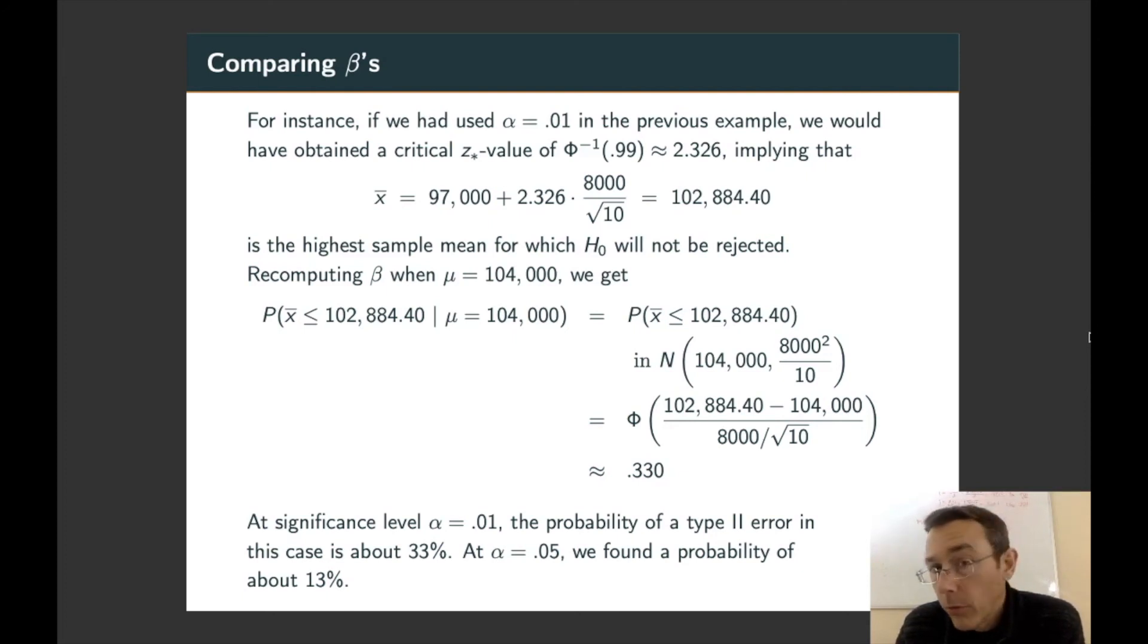So then let's go through and recompute beta when mu has that value. The probability that we do not reject the null hypothesis under those circumstances is going to be the probability that x-bar is less than or equal to that value in the normal distribution with that same mean and same standard deviation. Because we haven't changed the standard deviation of the population and we haven't changed the true mean of the population. So we get another P-norm statement, another normal CDF statement, and this time we get about 33%. So if you remember when alpha was 0.05, we found a probability of about 13%. So there's a pretty major difference here.